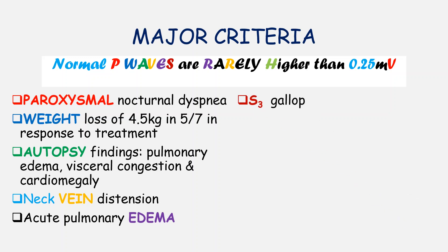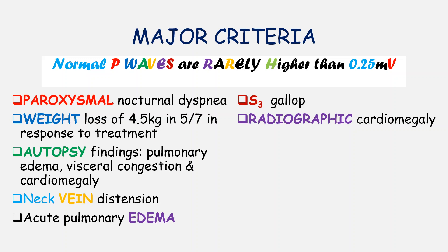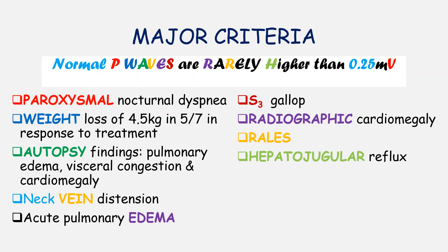The letter S in 'waves' stands for an S3 gallop. The S3 heart sound is heard on auscultation of the chest. The first letter R in 'rarely' stands for radiographic cardiomegaly — on x-ray or CT scan you will find that the heart is enlarged. The second R stands for rales, which are added breath sounds picked up on auscultation, usually heard over the bases of the lungs. The letter H stands for hepatojugular reflex: while applying pressure on the liver during physical examination, you observe for distension of the neck veins.